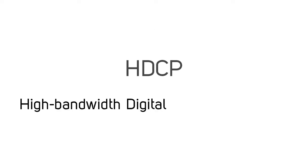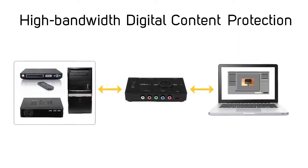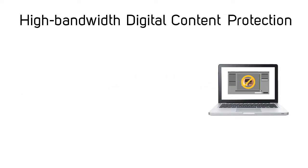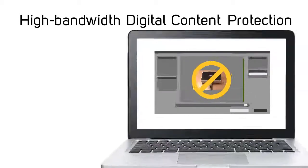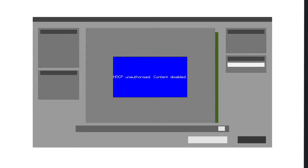HDCP stands for High Bandwidth Digital Content Protection. This system protects high-definition video from being intercepted, modified, or recorded between the source and the display. All StarTech.com devices adhere to the HDCP standard, so they do not transmit or record HDCP-protected content. HDCP content that is being blocked often appears as a blank screen or a screen with an HDCP error shown on it.